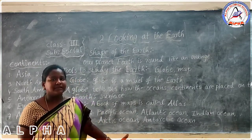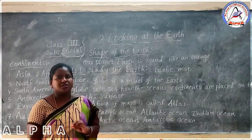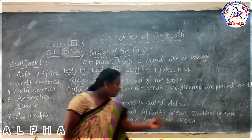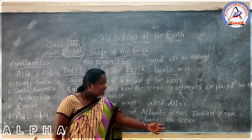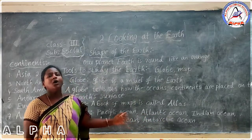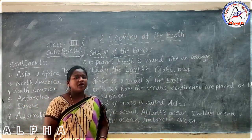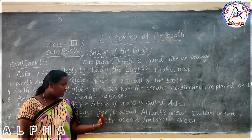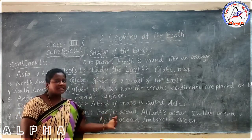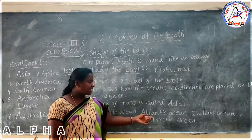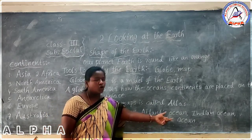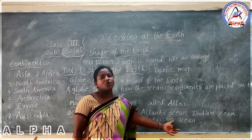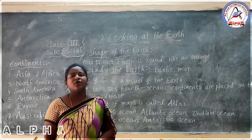On the earth, we observe five major oceans. What are the five major oceans? Pacific Ocean, Atlantic Ocean, Indian Ocean, Arctic Ocean, and Antarctic Ocean. These are the five major oceans we observe.